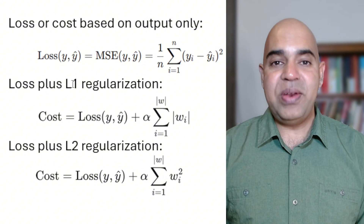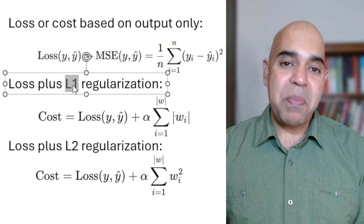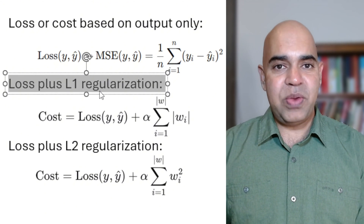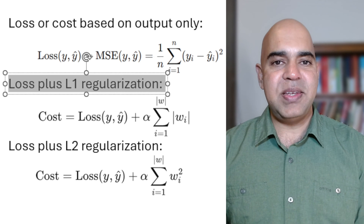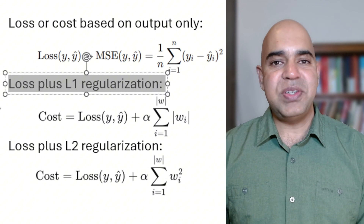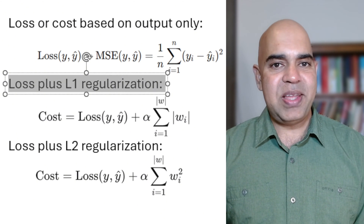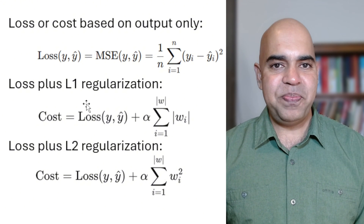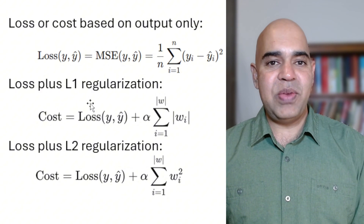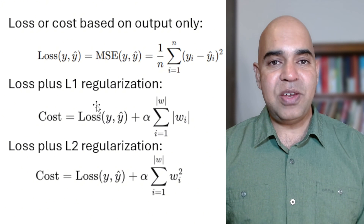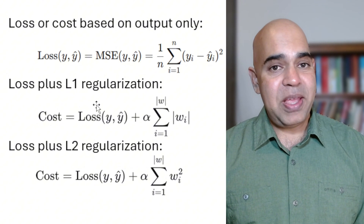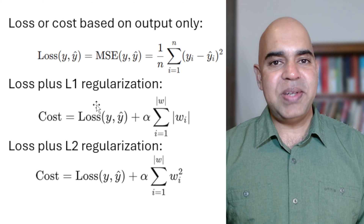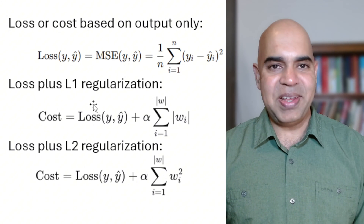We discussed how L1 regularization might help us in feature selection. It can make some of the weights associated with non-prominent features close to zero, which means they have no impact on the prediction. L1 can also make some of the weights associated with the prominent features large, meaning those features will have high impact on the prediction.